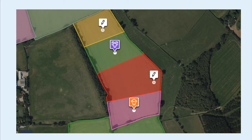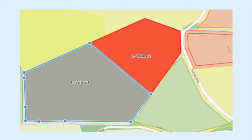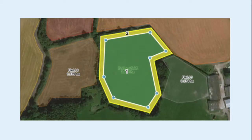Some ways you can use subfields are: recording and sharing accurate working area for each field, growing multiple crops in a field during a season, organising rotational or mob grazing, and finally keeping track of any environmental stewardship that you have on the farm.